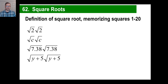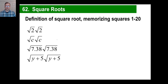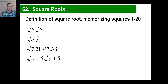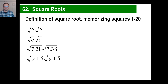Look at this list of problems. The square root of 2 times the square root of 2 — if you do this in a calculator, the answer is 2. The square root of C times the square root of C — anything times itself under that radical, you just get the same thing. You don't need to know things like the square root of 7.38; the answer will be 7.38 by definition. The answer to the last one will be Y plus 5. You're just multiplying those together and taking the square root.